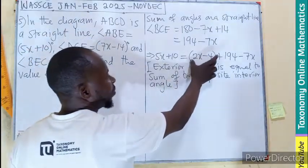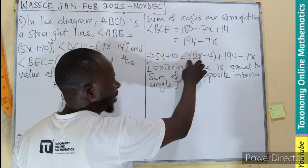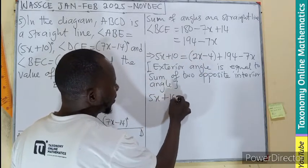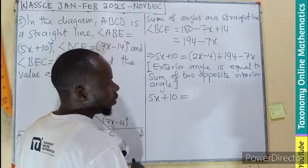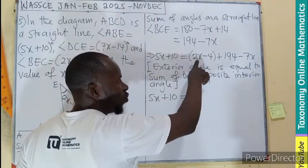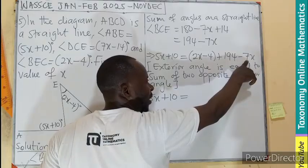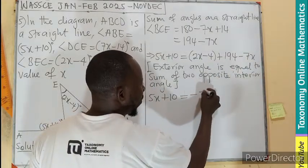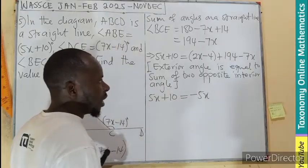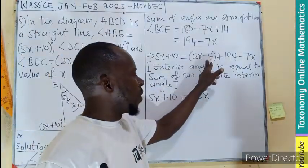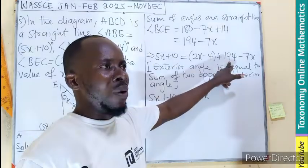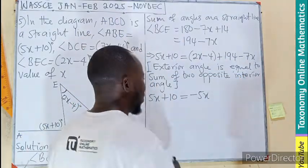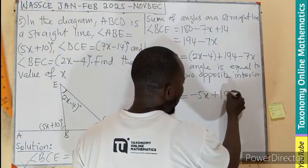Now, this bracket means nothing because there is nothing here multiplying. So I can easily pick my 5x plus 10 equals... If you pick the 2x, you pick the minus 7x, that will give you a negative 5x when you do that. Then minus 4 plus 194, also means 194 minus 4. That will give us a positive 190.